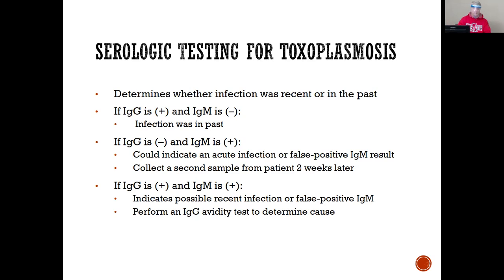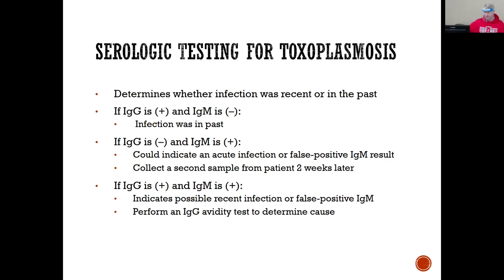Perform an IgG avidity test to determine the cause. You can order both IgG and IgM for Toxoplasma gondii, and we hope you'd be able to interpret the results rather than just sending them out. Some of this has you redoing and retesting.